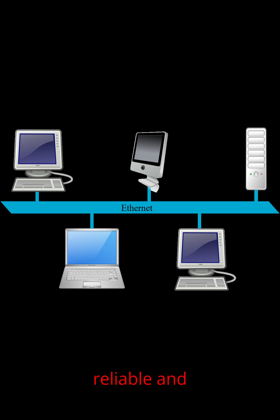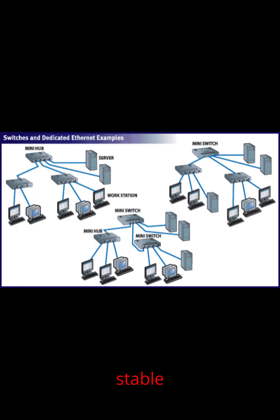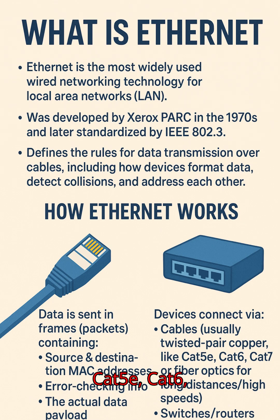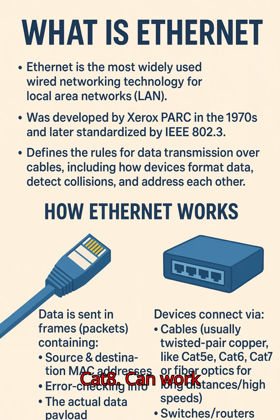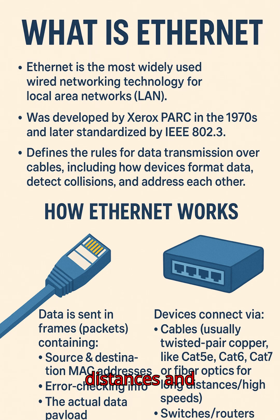Key features of Ethernet: it is a wired connection using a physical cable, reliable and stable compared to Wi-Fi. It supports different cable categories — CAT5e, CAT6, CAT6a, CAT7, and CAT8 — and can work over fiber-optic cables for long distances and high speeds.